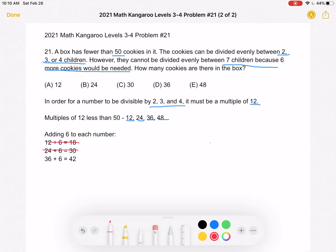36 plus 6 is 42. That is a multiple of 7. But let's just continue on to double check. 48 plus 6 is 54, and that is not a multiple of 7.